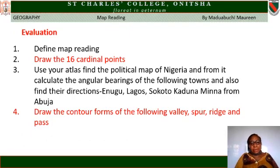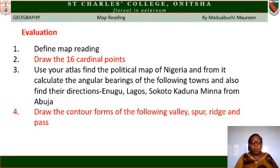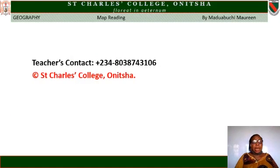We have come to the end of this lesson and I hope you enjoyed it. Let me evaluate you with these questions: One, define map reading. Two, draw the 16 cardinal points. Three, use your atlas to find the political map of Nigeria and from it calculate the angular bearings and directions of Enugu, Lagos, Sokoto, Kaduna, and Minna from Abuja — Abuja is the observer's position. Four, draw the contour forms of the following: valley, spur, ridge, and pass. Do the assignment and submit to my WhatsApp number 08038743106. Thanks and God bless you.